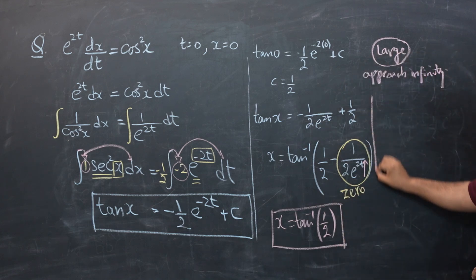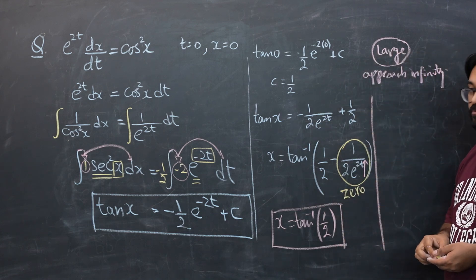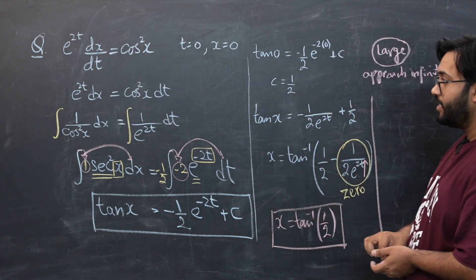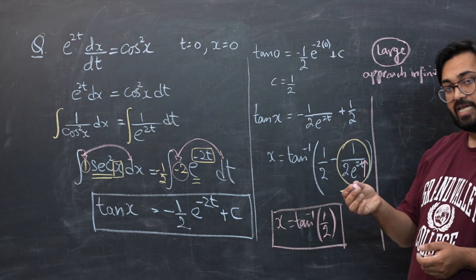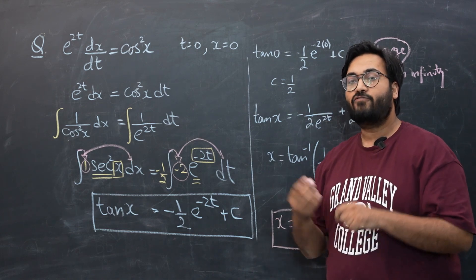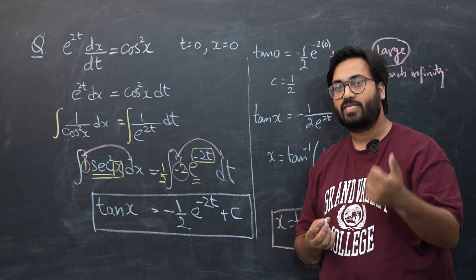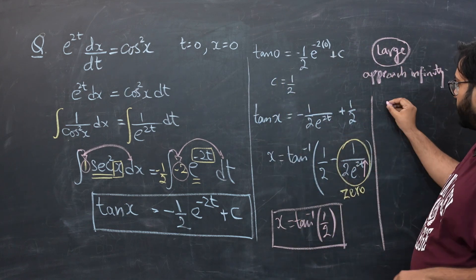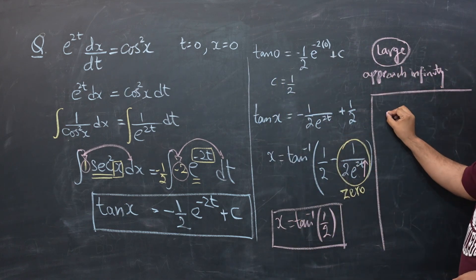This last part of the question asks us explain why x increases as t increases. So we need to show that x and t has an increasing relationship. We have seen in Paper 1 that for increasing relationships, for increasing functions, the derivative is always positive.